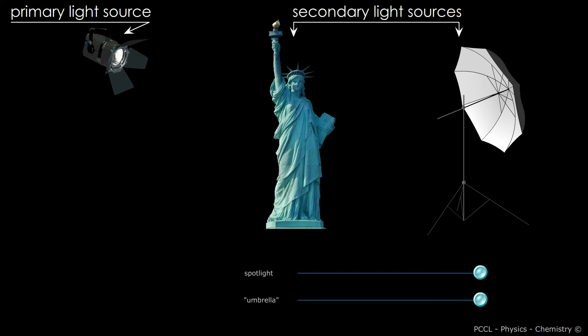The lamp is part of the primary sources and the umbrella is part of the secondary sources. Note that the statue is also a secondary source — all objects are secondary sources of light.